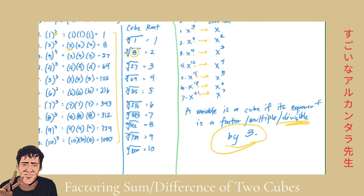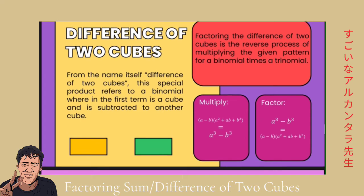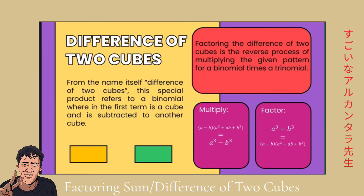The difference of two cubes has the following format. If you multiply the quantity (a minus b) times the quantity (a squared plus ab plus b squared), it gives you a cubed minus b cubed. Since multiplication is the inverse of factoring, when you factor a cubed minus b cubed — two terms, two cubes, operation is subtraction — your factor pattern looks like this. You need to apply your skills to identify which is a and which is b.